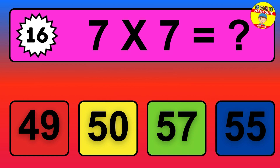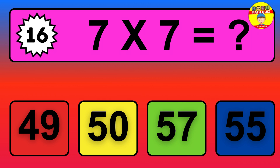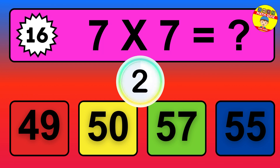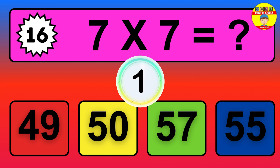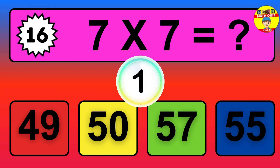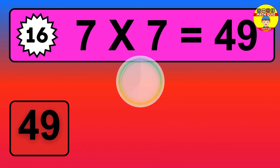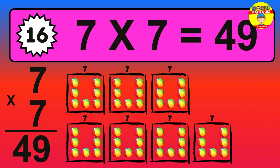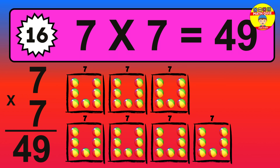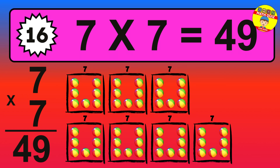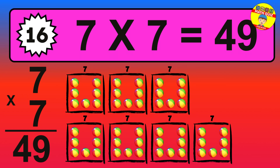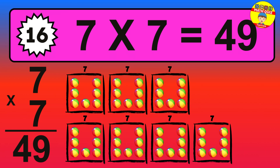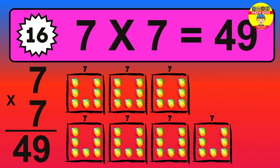Question sixteen: seven times seven equals what? The answer is seven times seven is forty-nine. To calculate, we have seven groups with seven balls each one. So how many balls do we have? Forty-nine balls.